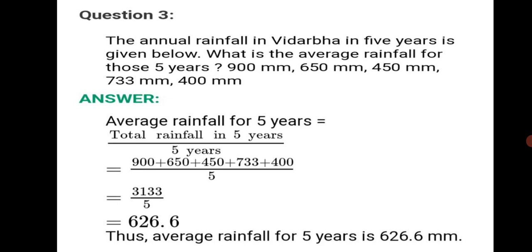Thus the average rainfall for 5 years is 626.6 millimeters. All you have to do is add the given amount of rainfall for 5 years and divide it by 5.